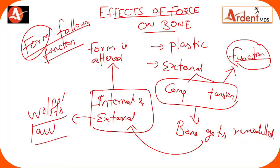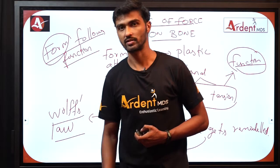Wolf's Law states that the internal and external architecture of the bone tends to get remodeled upon the stress or function acted upon it. This is called Wolf's Law of Transformation of the Bone. This is the basic physiology of the bone in response to function, pressure, or tension.